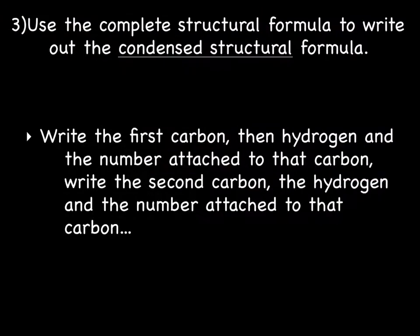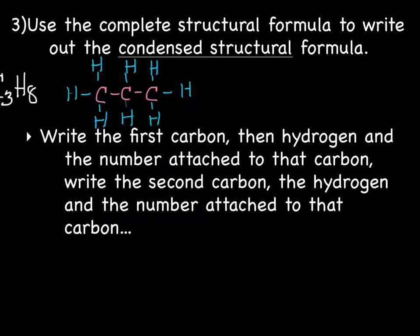Okay, now, to write the condensed structural formula, we're going to use the complete structural formula and work from there. So let's put back our C3H8 example. And the first thing you're going to do is write the first carbon. So here's our first carbon, right there. So we'll write down carbon, and then write hydrogen and write the number attached to that carbon, how many hydrogens are attached. Well, looks like three.